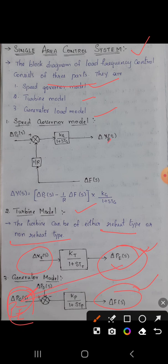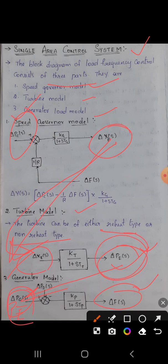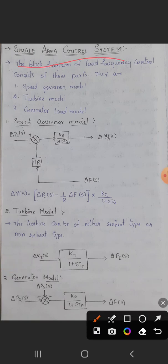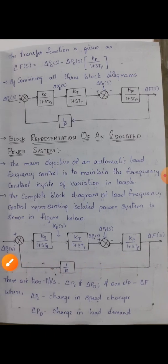The output from here will be the turbine input. Finally, first we have delta Pc(s) as the input and delta Xc(s) as the output. The turbine model takes this as input, and the turbine model output will be the input of the generator model. So we have drawn three block diagrams, and when we combine these three block diagrams, we get the single area control system as well as the complete isolated block diagram representation.